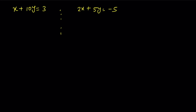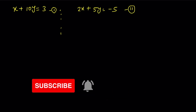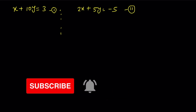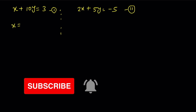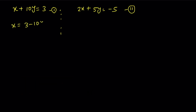The first equation is x + 10y = 3, and the second equation is 2x + 5y = -5. First we take the first equation. From the first equation we get x = 3 - 10y. And from the second equation we get y = (-2/5)x - (5/5).